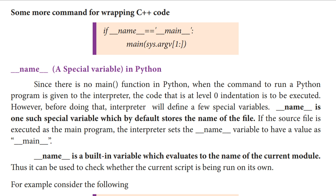That variable is __name__. It is one such special variable which by default stores the name of the file — the name of the source file. When the Python program executes, the Python program's name is stored in the variable. If the source file is executed as the main program, the interpreter sets the __name__ variable to have a value of __main__. So in the name variable, we assign the name of the main function.